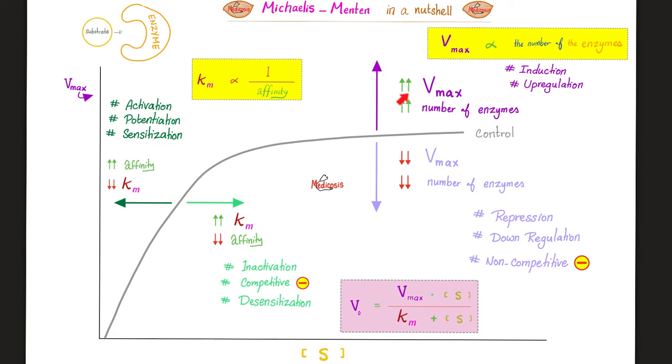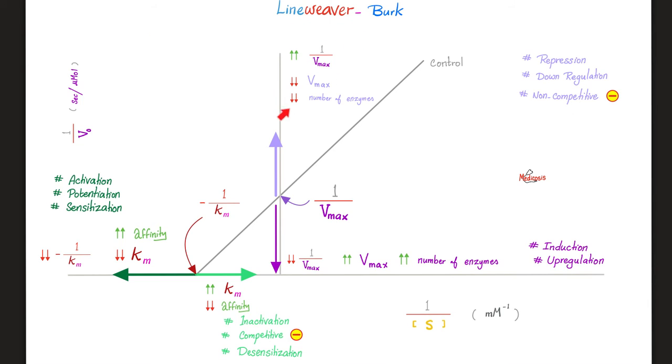Here is Michaelis-Menten again. Upward shift increases the rate. Downward shift decreases the rate. Shift to the left lowers the Km, shift to the right raises the Km. And here is Lineweaver-Burke. Shift me upwards, I decrease the Vmax. Shift me downwards, I increase the Vmax. Shift to the left lowers the Km. A shift to the right raises the Km. When I raise the Km, affinity goes down, as you know. An upward shift could be caused by repression, downregulation, noncompetitive inhibition. A downward shift could be caused by induction of genes that code for the enzyme, or upregulation of the enzyme or the receptor. Activation, potentiation, sensitization will increase the affinity between the enzyme and its substrate. Conversely, inactivation, competitive inhibition, desensitization will lower the affinity.